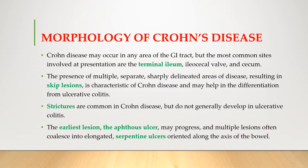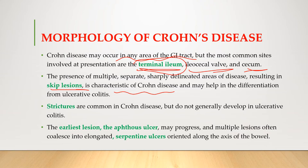Now let's look at the morphology of Crohn's disease. Crohn's disease may occur in any area of the GIT, but the most common site involved is the terminal ileum, ileocecal valve, and cecum. The presence of multiple separate, sharply delineated areas of disease results in skip lesions, which is characteristic of Crohn's disease and helps differentiate it from ulcerative colitis. Strictures are common in Crohn's disease but do not generally develop in ulcerative colitis.